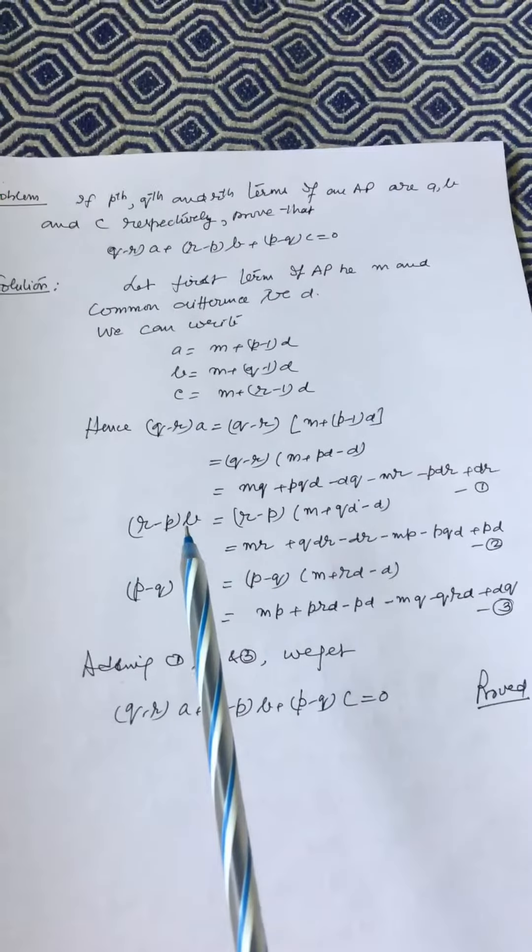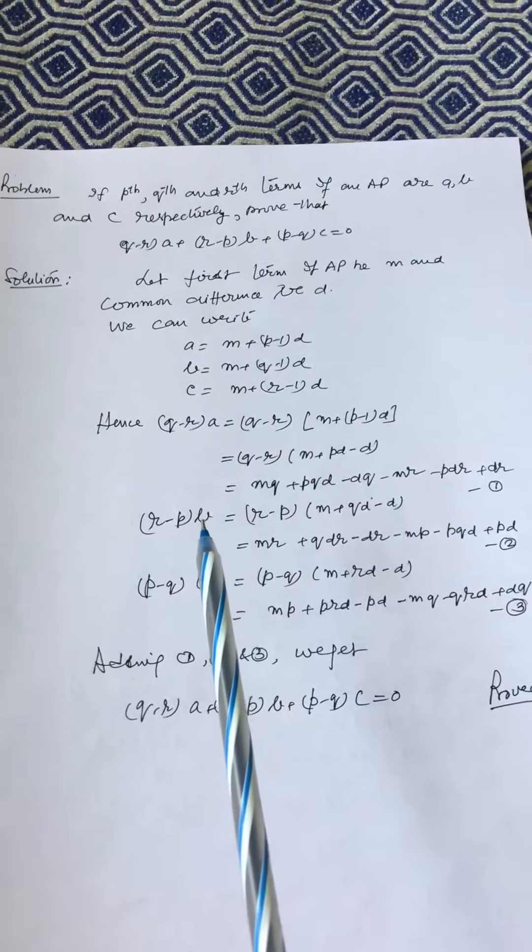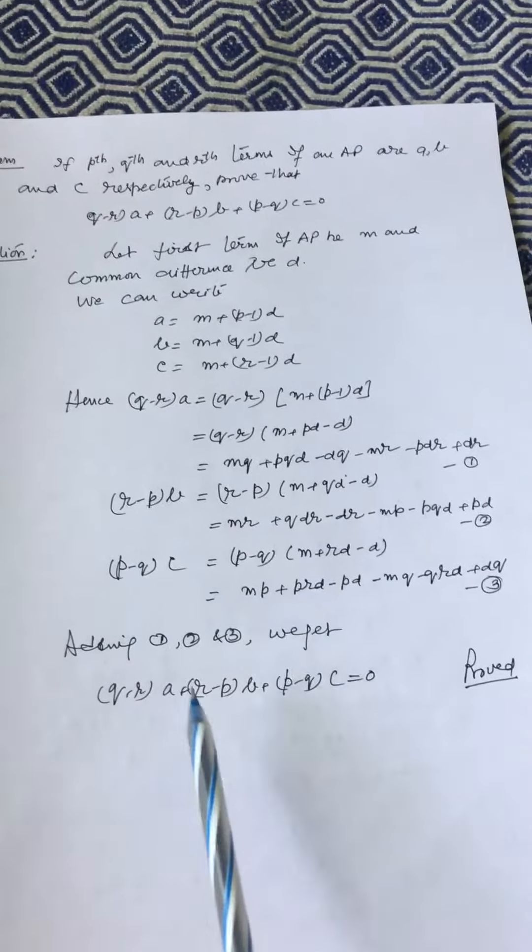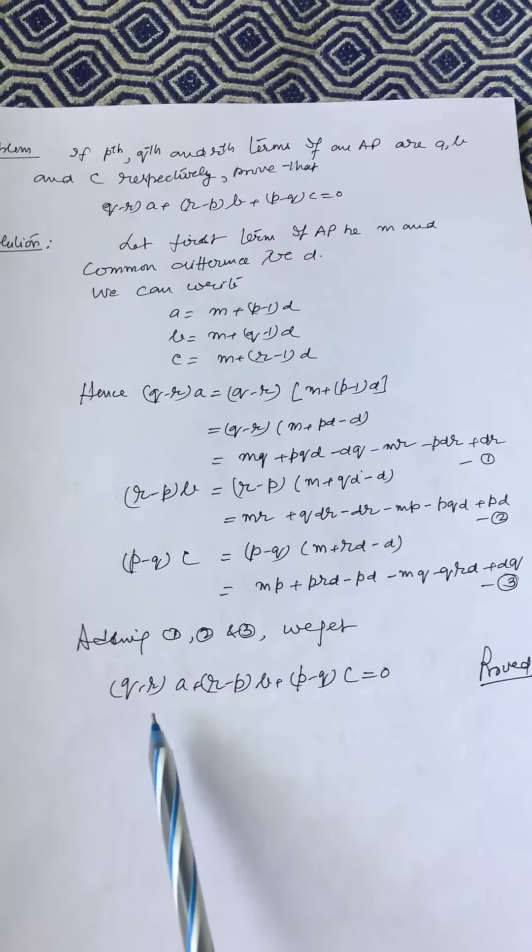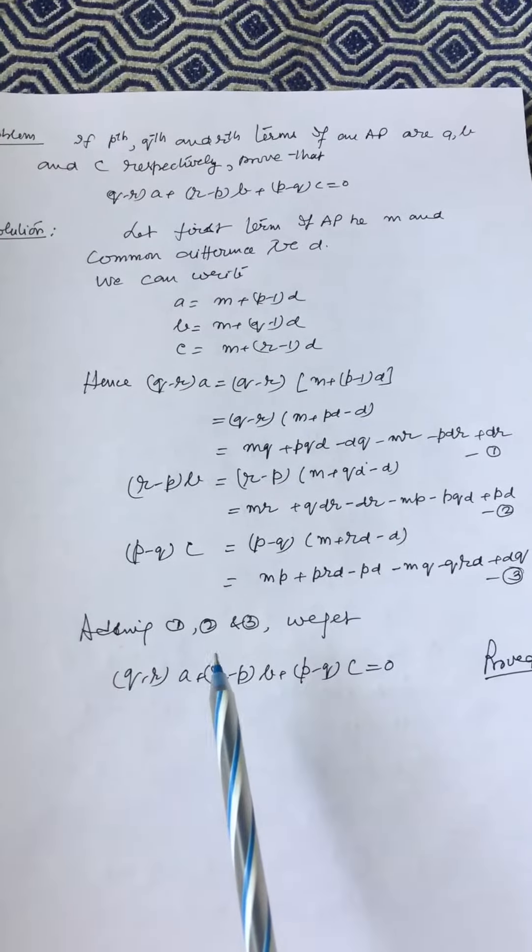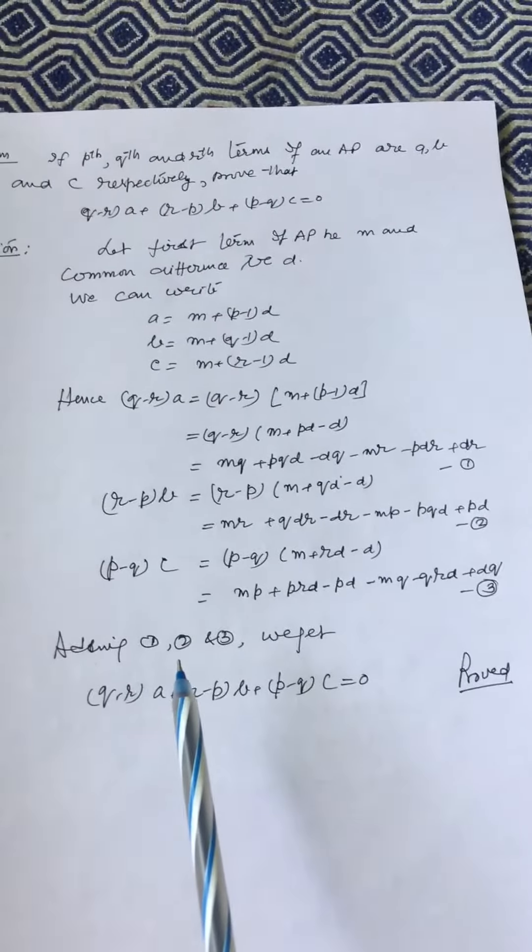Similarly we find out (R-P)B and (P-Q)C as given in equations 2 and 3. Now add equations 1, 2 and 3 and we get (Q-R)A + (R-P)B + (P-Q)C = 0. Proved.